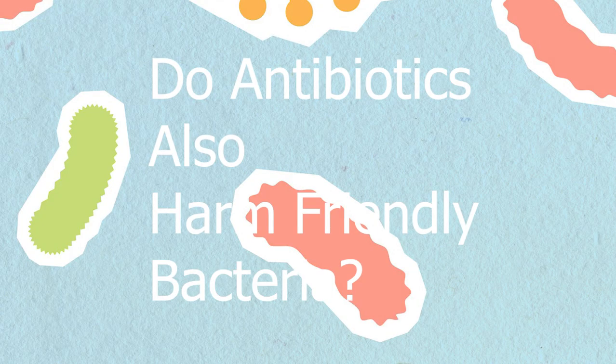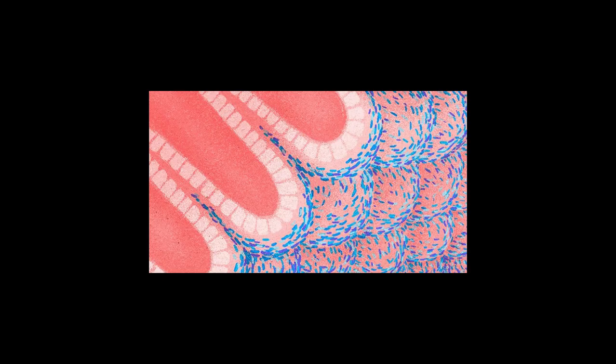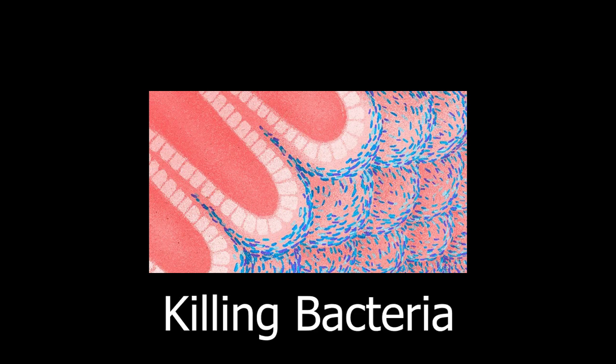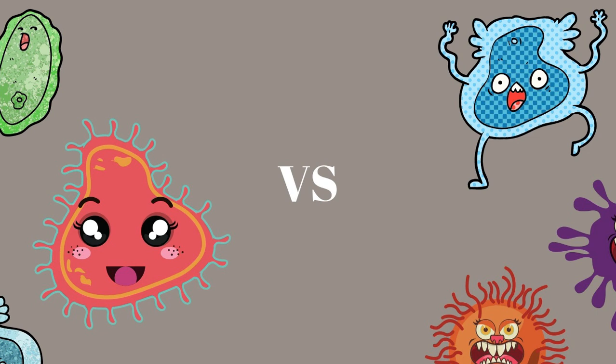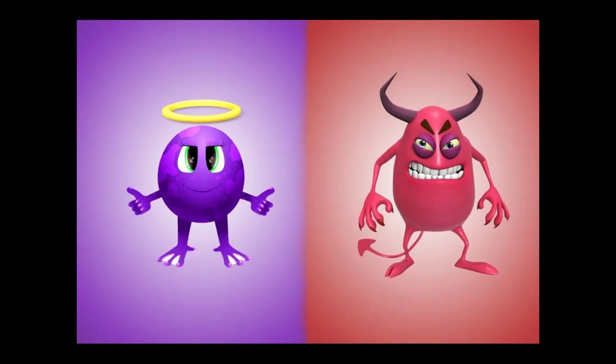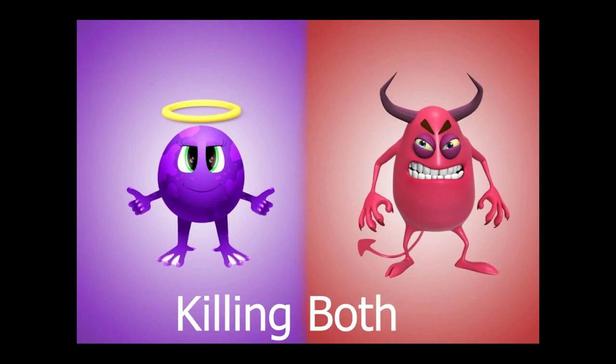So another question arises: do antibiotics also harm friendly bacteria? The answer is yes. When you take an antibiotic, it enters your bloodstream and travels through your body, killing bacteria but not human cells. However, there are few differences between harmful and friendly bacteria. Antibiotics kill not only the bad bacteria making you sick, but also your resident friendly bacteria.